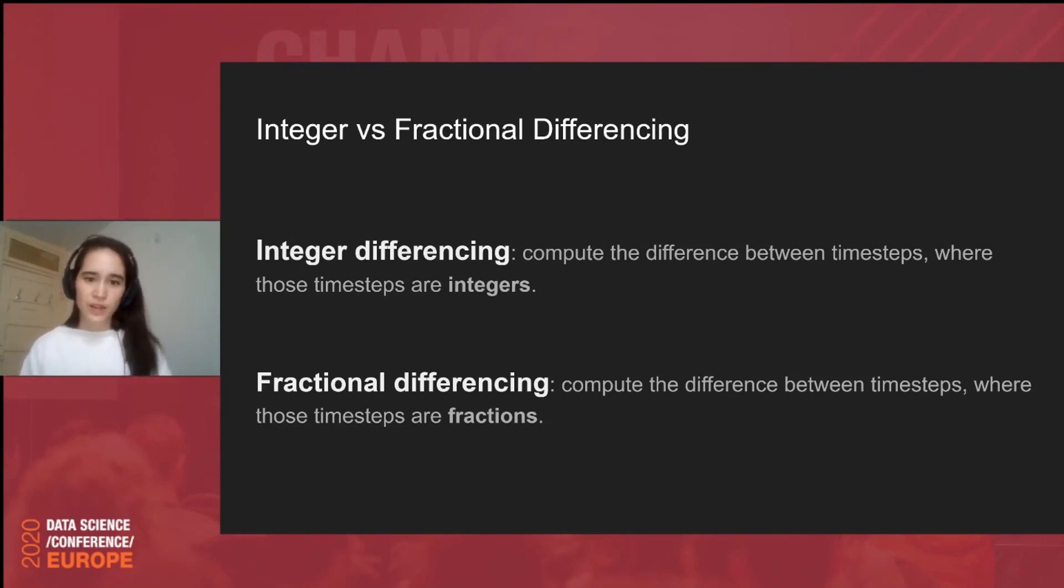The math is a little complicated, but at a high level, the distinction is as follows. So, in integer differencing, you compute the difference between timestamps and that timestamp will be an integer. So, for example, if you want to do first-order differencing, you can compute the difference between the current timestamp and previous timestamp. Second-order differencing would mean you compute the difference between the current timestamp and two timestamps ago. For fractional differencing, you don't subtract values that are an integer value apart to be a bit more concrete.